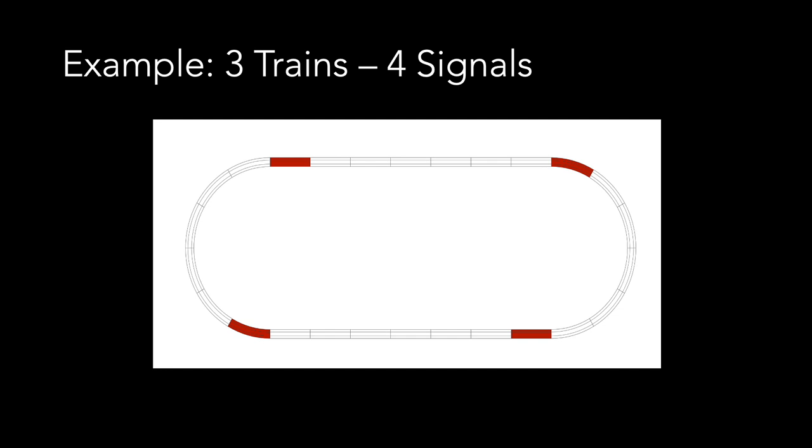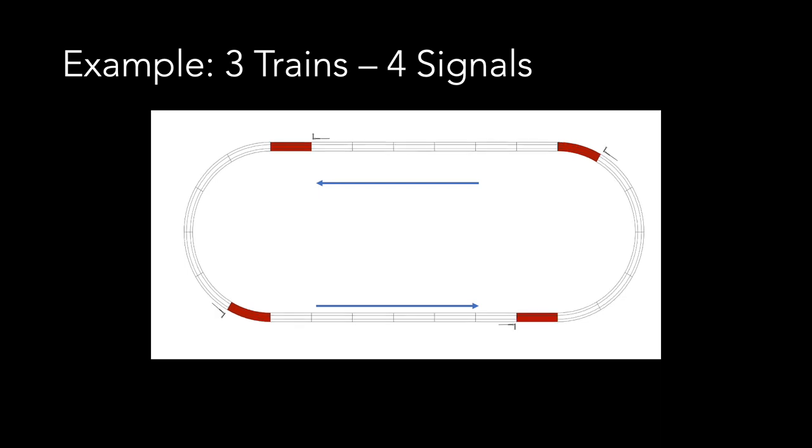Next, we will need to place our signals. We will need one signal per block. The direction of travel for the layout is anticlockwise, as represented by the blue arrows now on the screen. In the direction of travel, each signal needs to be located directly before a contact track, as can be seen on the plan now. We can then look at connecting the signals to the contact tracks.